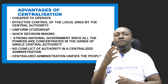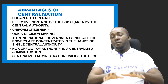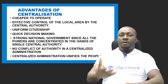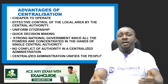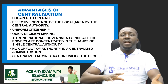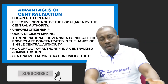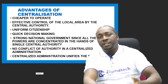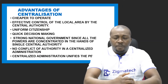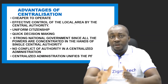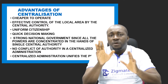Also, there is effective control of local areas by the central authority, because powers and authorities of local areas are actually coming from the central government. The central government has the right to take back the powers it has accorded to local authorities. Also, there is uniform citizenship, as in a unitary system of government — uniformity of citizenship because citizens owe their allegiance to one central authority.